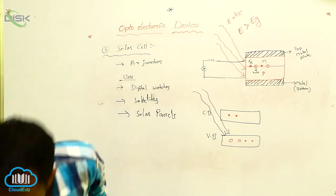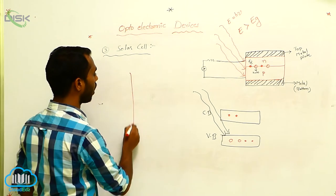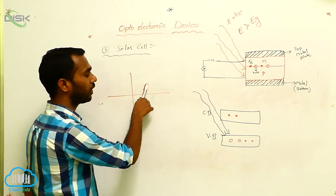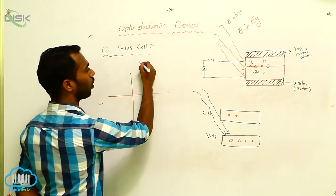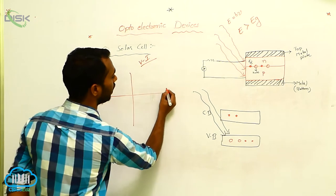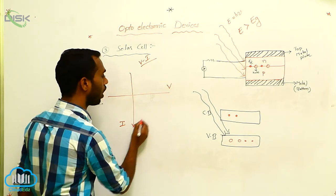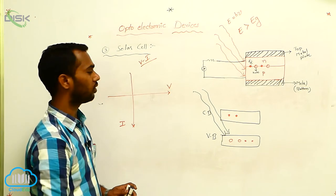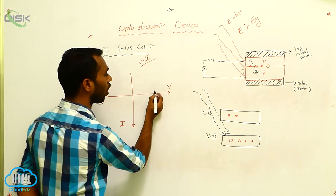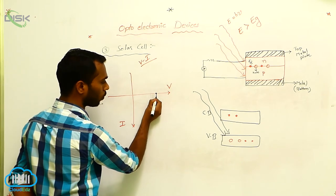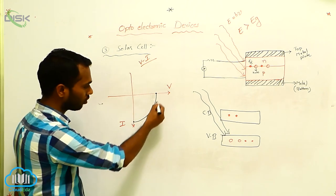For the VI characteristics, take X and Y axes forming four quadrants. In the fourth quadrant we get the VI characteristics curve for the solar cell. Current I is measured on the Y-axis and voltage V on the X-axis. As you increase the voltage, current also increases, giving this type of characteristic curve for the solar cell.